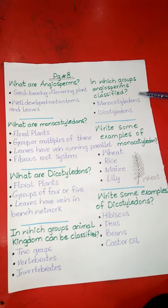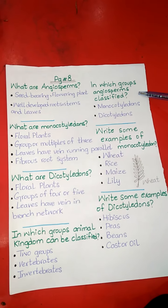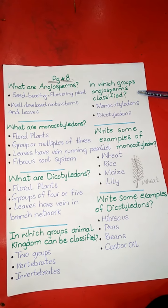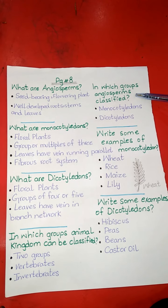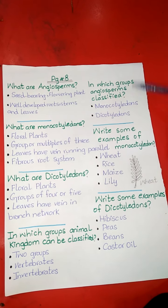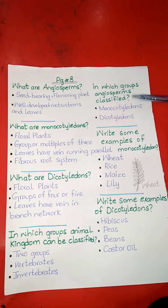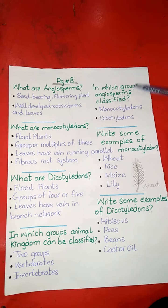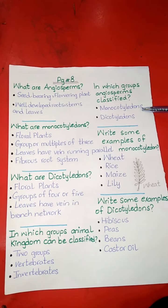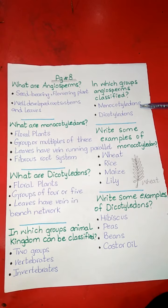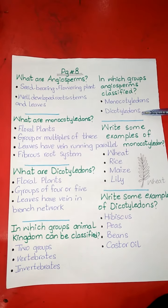The next question is: in which groups are angiosperms classified? Angiosperms are classified into two groups. The first group is monocotyledons, and the second group is dicotyledons.